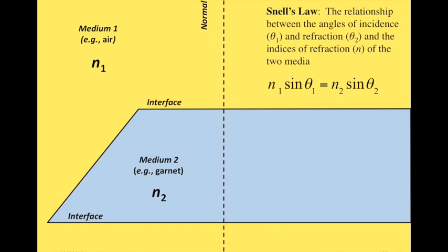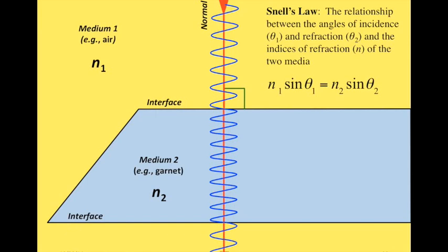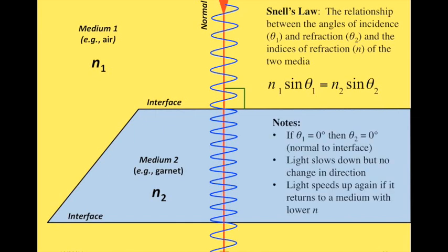A different scenario occurs when light comes in along the normal direction — at 90 degrees to the interface. In this case, light still slows down and changes frequency when n1 is less than n2, but because it's traveling along that normal direction there is no change in angle. Light passes straight through the crystal with no change in direction, only a change in velocity. When it exits the crystal, the velocity returns to what it was in air. If theta 1 equals zero, then theta 2 must equal zero.